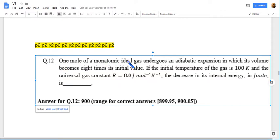One mole of a monoatomic ideal gas undergoes adiabatic expansion in which its volume becomes 8 times its initial value. If initial temperature of gas is 100 kelvin and the universal gas constant R is given, the decrease in internal energy in Joules is.